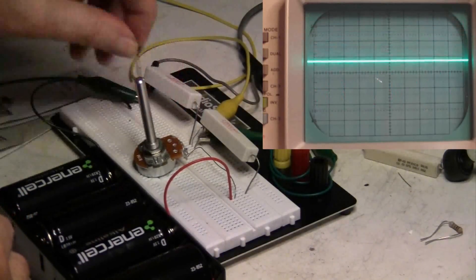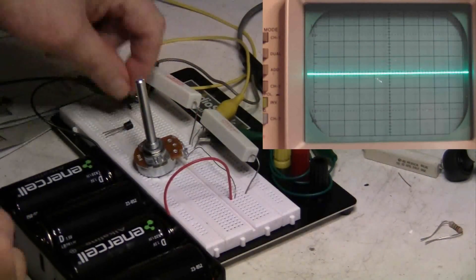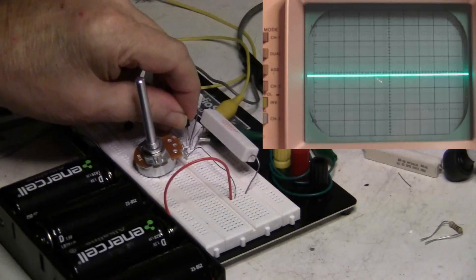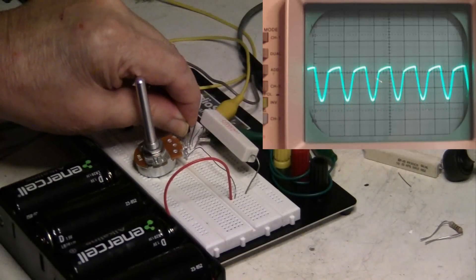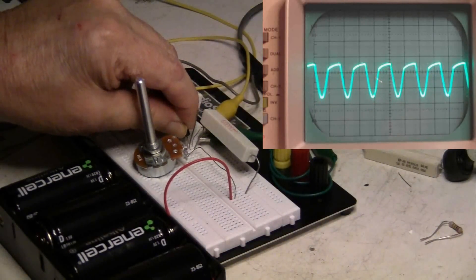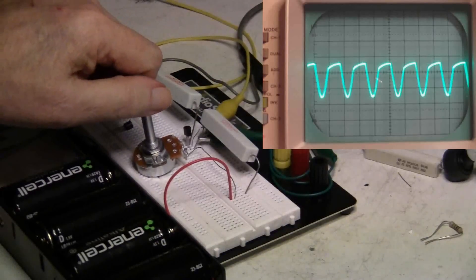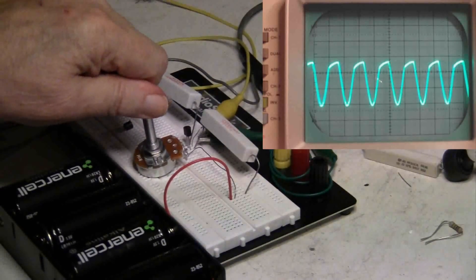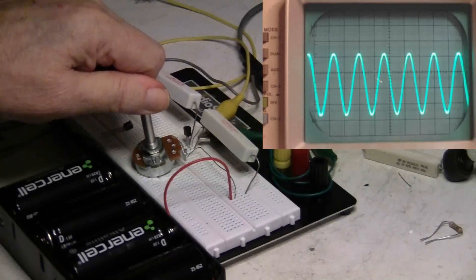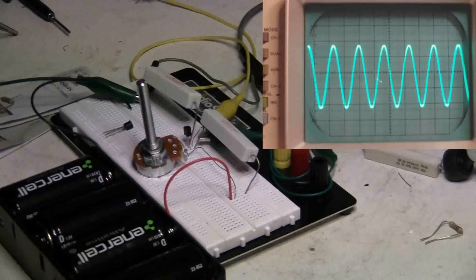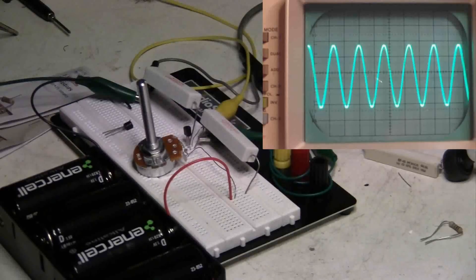And take that out and plug in the other transistor that has a beta of 65.73. And you can see that it doesn't look as nice. And now I'm going to adjust the bias resistor so I can get a good clean signal.